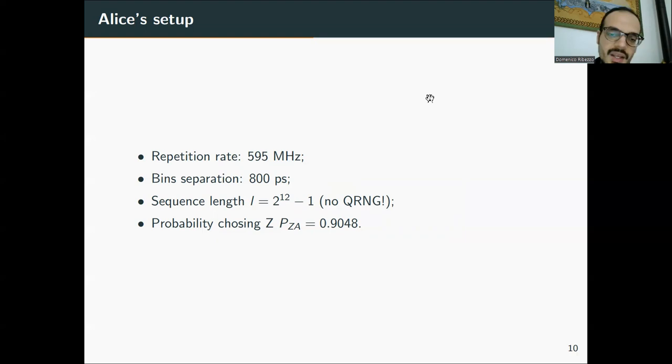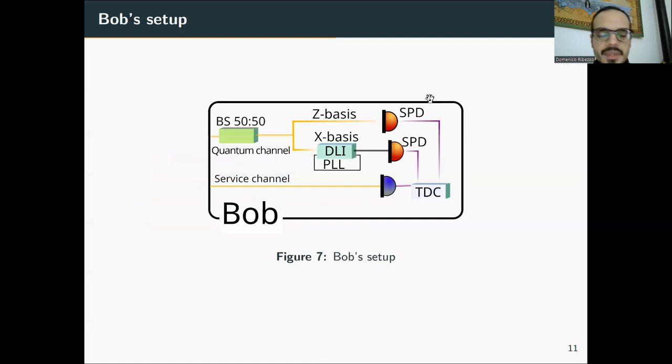We didn't implement a quantum random number generator. So the states are generating according to a preloaded sequence into the FPGA of a length 4095 bits. It should be noticed that even if this is a repeated sequence, since the loss happens randomly and many photons are lost, the final key cannot be normally advanced. The probability of choosing the Feralis in the sequence was 90 percent.